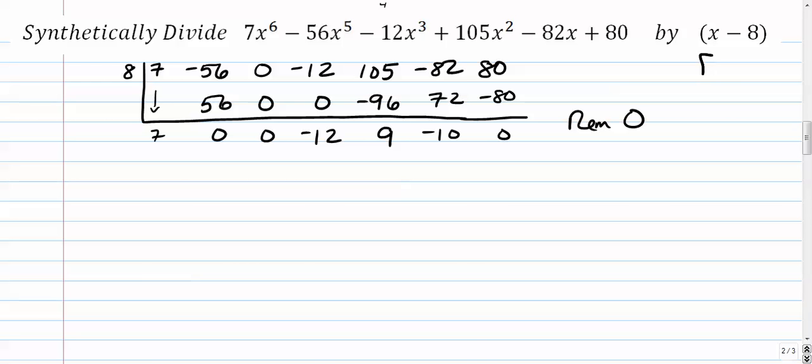So again, when the remainder is 0, that means that this is a factor. So your quotient, what's remaining here, is 7x to the 5th.